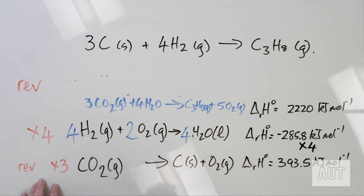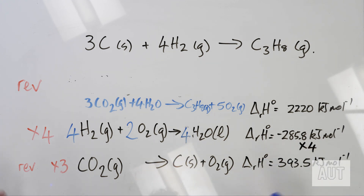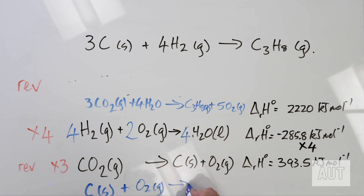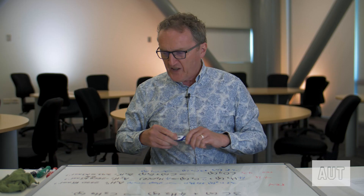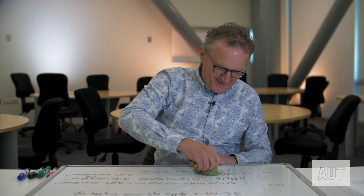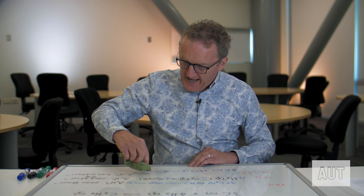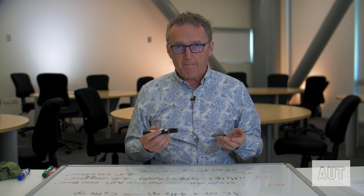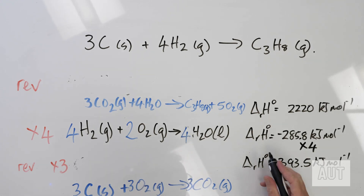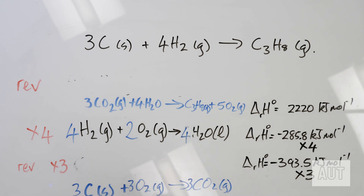The third equation is the most likely to go wrong because we're doing two things: reversing and multiplying through by a constant. Reversing first gives: carbon + O₂ → CO₂. Then multiplying by three gives 3C + 3O₂ → 3CO₂. Since we reversed it, we change the sign, and since we multiplied by three, we multiply the delta H value by three as well.